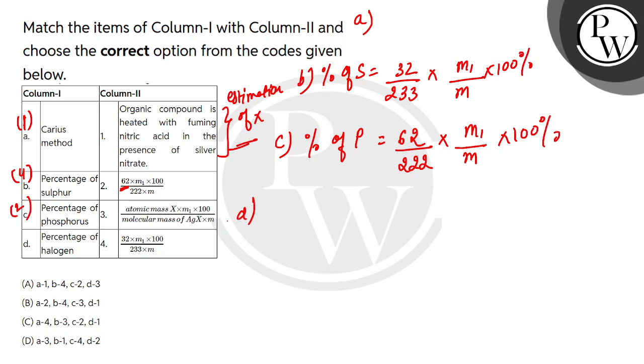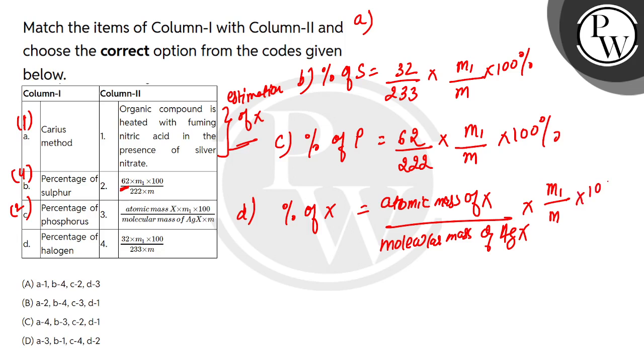And what is written in D? Percentage of halogens. Halogens are estimated by Carius method. In Carius method, halogens are in halide form. So atomic mass of halogen or molar mass of halogen, whatever chloride, bromide, or iodide, divided by molar mass of silver halide AgX, multiplied by M1, that is mass of the precipitate AgX, divided by mass of the organic compound, multiplied by 100%. So D will match with 3.